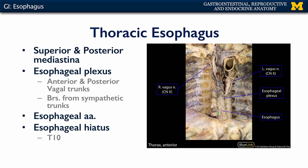The esophageal plexus that controls the thoracic portion of the esophagus consists of contributions from the anterior vagal trunk, which gets most of its supply from the left vagus nerve, with some branches from the right. There is also a posterior vagal trunk that is predominantly from the right vagus nerve and also has some branches from the left. We can see fine-scale branches of the esophageal plexus on this anterior portion of the esophagus.